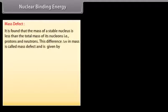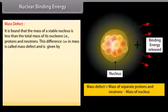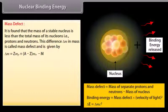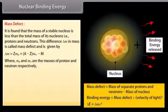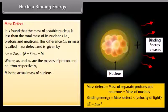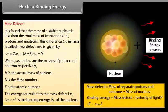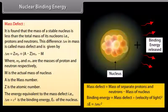Nuclear binding energy. Mass defect. It is found that the mass of a stable nucleus is less than the total mass of its nucleons, that is protons and neutrons. This difference delta m in mass is called mass defect and is given by delta m is equal to Z times mp plus A minus Z times mn minus m, where mp and mn are the masses of proton and neutron respectively. M is the actual mass of nucleus. A is the mass number. Z is the atomic number.